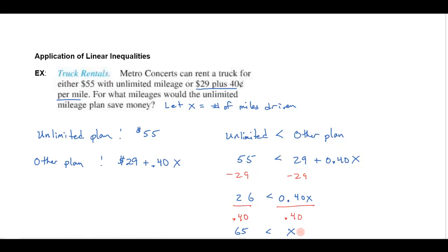65. So this is written in what I call Hebrew because I have to read it from the right, x is greater than 65. So let's turn it around in English, x is greater than 65. So the question was for what mileages would the unlimited mileage plan save money? If x is greater than 65, so if the miles driven exceed 65, then the unlimited plan will save money.